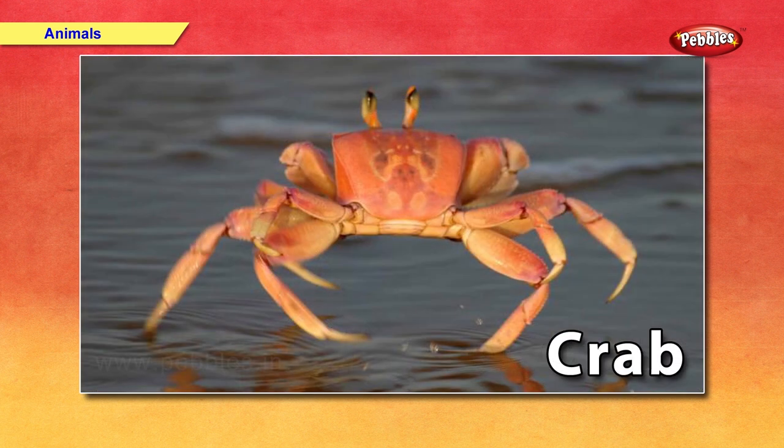Crab — crab is a ten-legged animal whose body is covered with a thick shell. They are generally found in oceans. People use it as food.